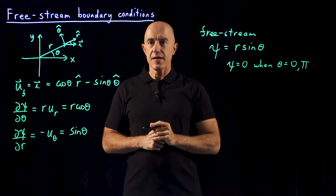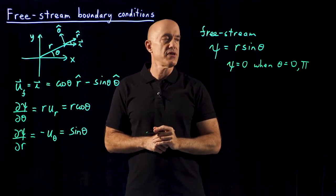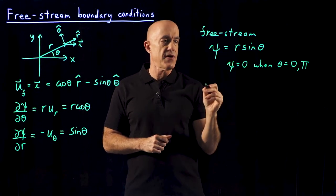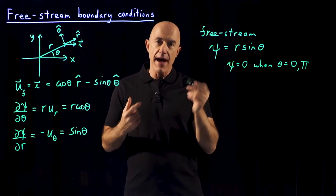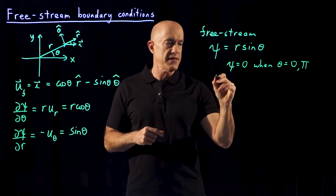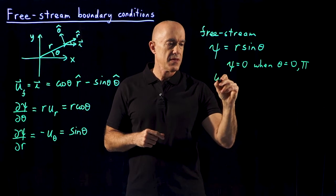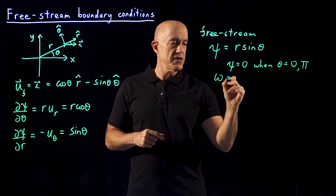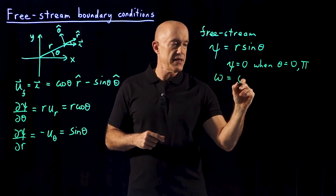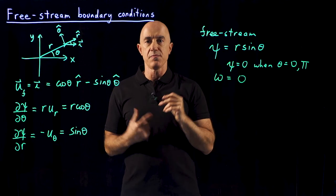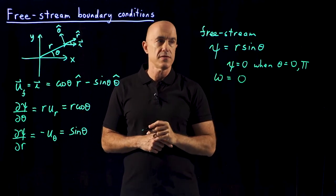That's our boundary condition in the free stream for the stream function. The boundary condition for the vorticity is quite simple: there is no vorticity in the free stream, so that would be zero.